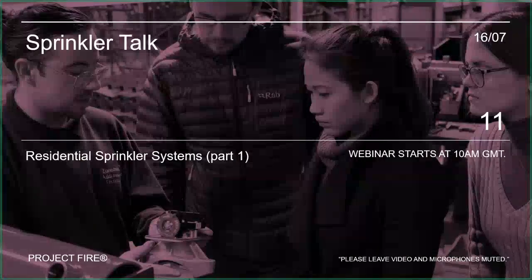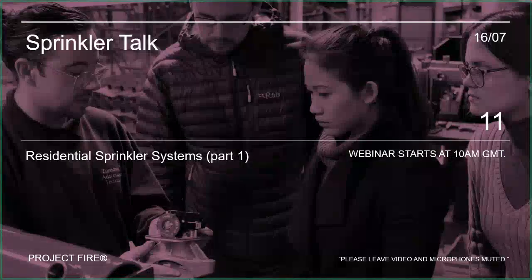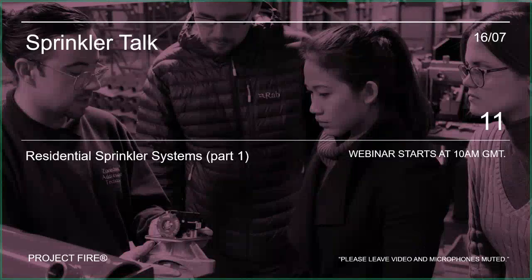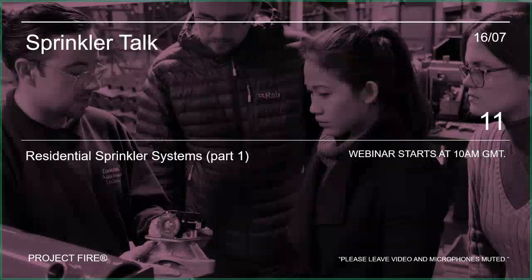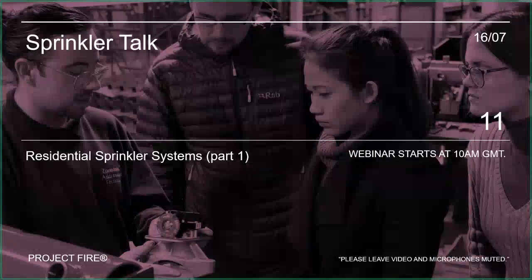Most of what I talk about in the Sprinkler Talks is based on BS EN 12845, which is the standard for design and installation of industrial and commercial sprinkler systems. But obviously there is a big part of the sprinkler world which is down to domestic and residential. The general principles are exactly the same and some of the components are certainly similar, but everything's just smaller — that's the main difference.